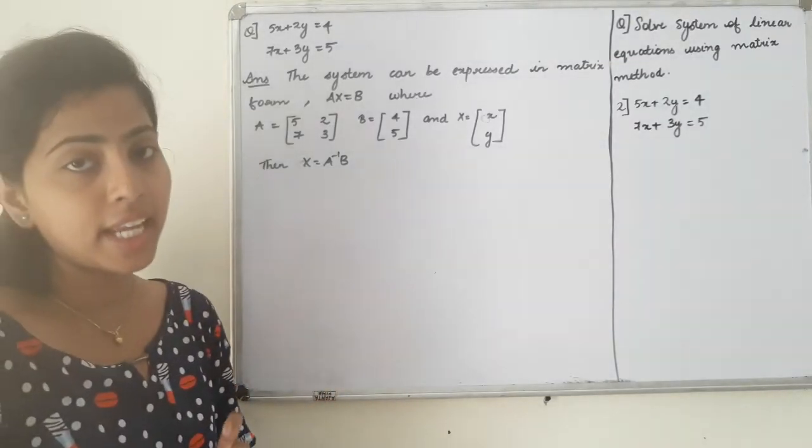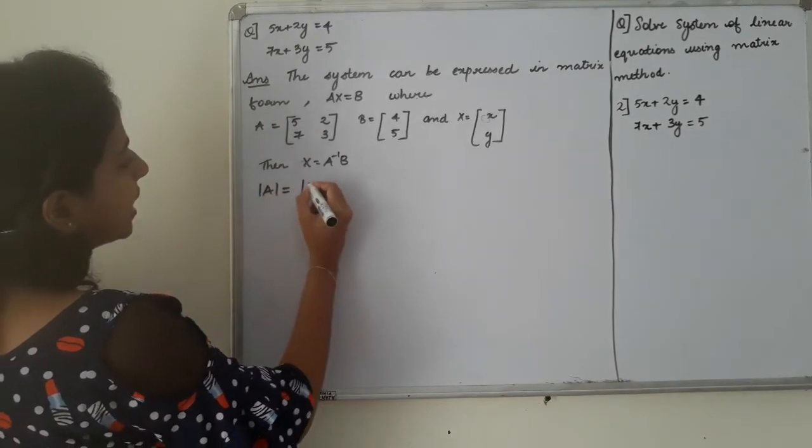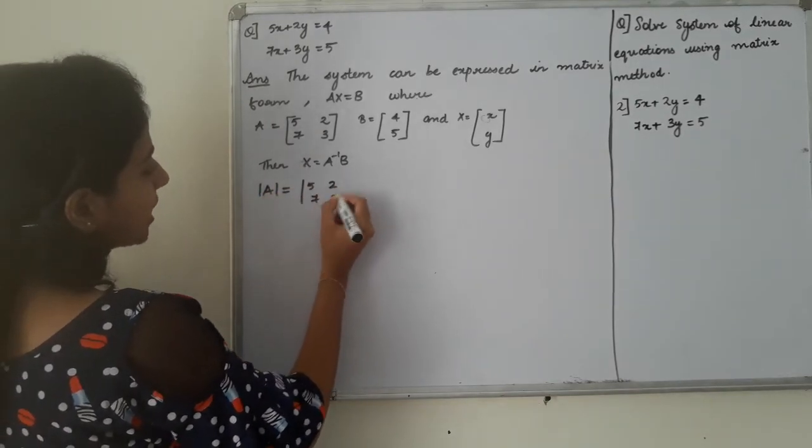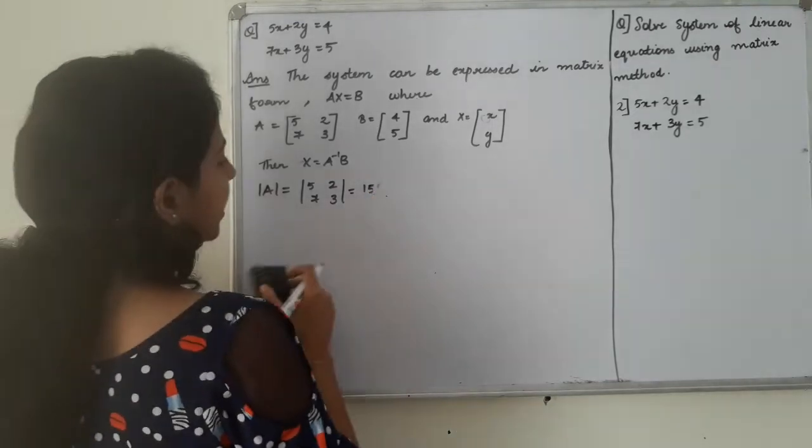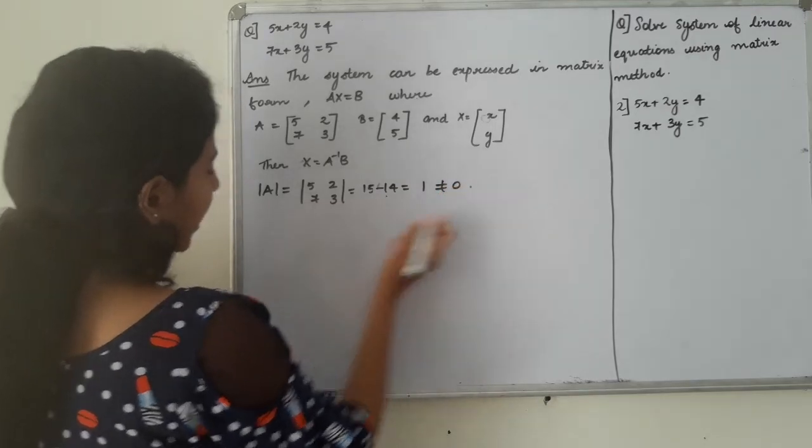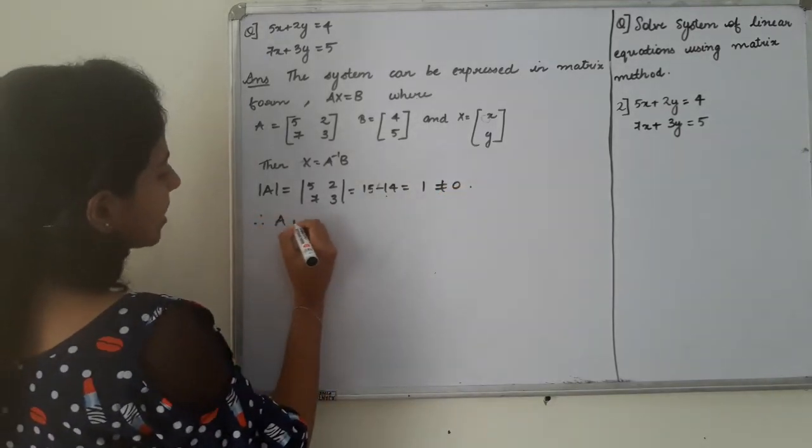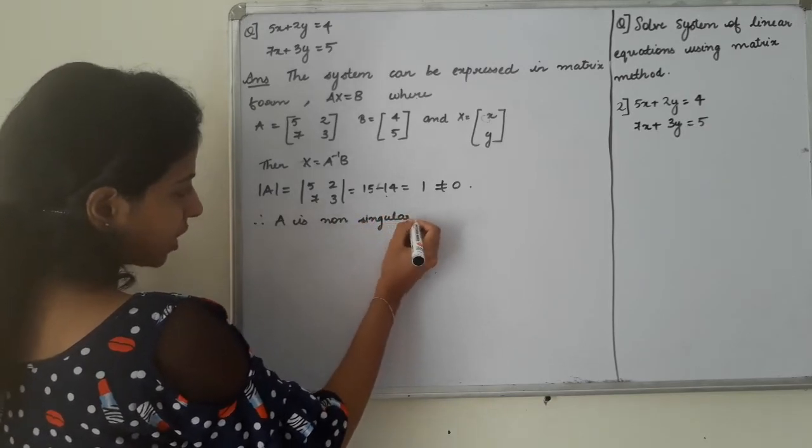We will take A inverse. Then A inverse will take a 2x2 matrix in order to determine. Determinant will be 15-14=1, not equal to 0. Therefore, A is non-singular.